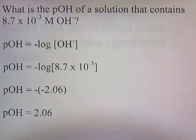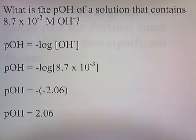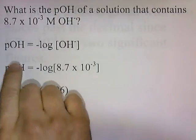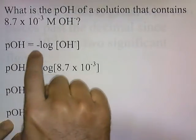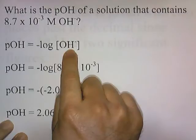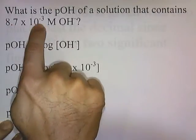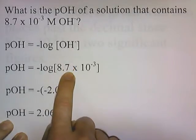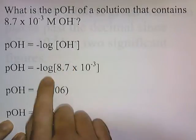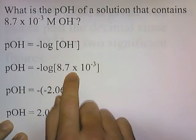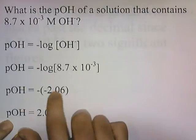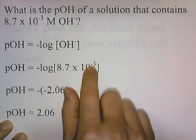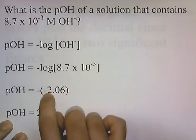What is the pOH of a solution that contains 8.7 times 10 to the negative third molar hydroxide? Our formula is pOH equals negative log of the concentration of hydroxide. The concentration of hydroxide is 8.7 times 10 to the negative third, so we put that in and take the log of this number, ending up with negative 2.06. Anytime you take the log of 10 to the negative power, you get a negative number.